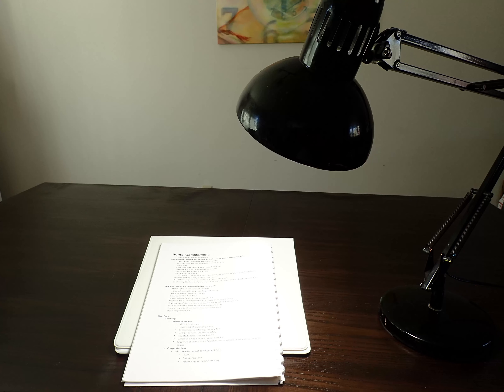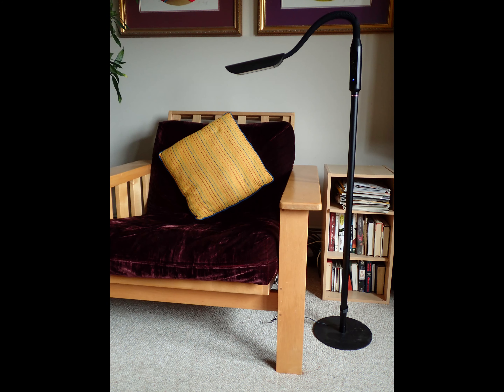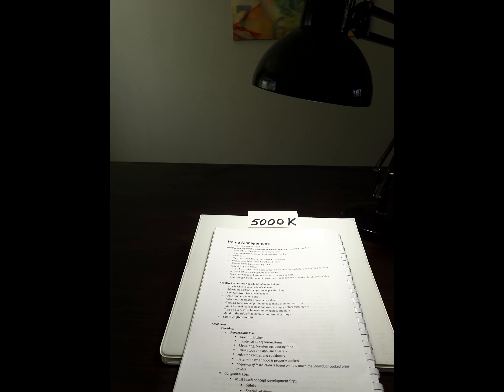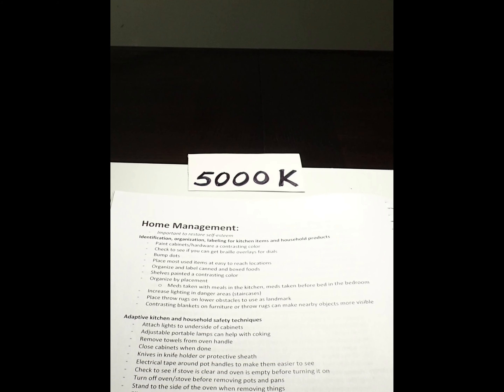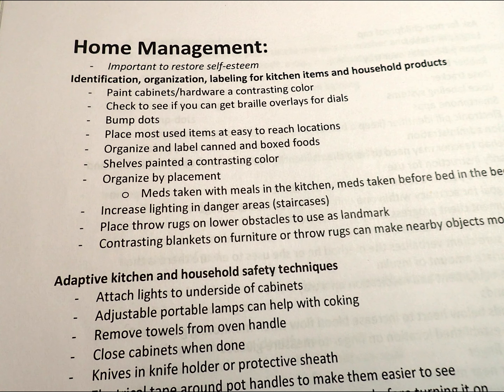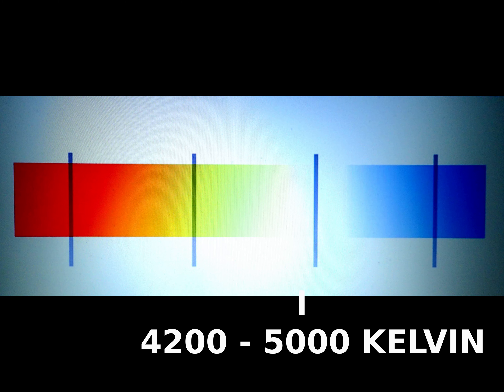Cool light bulbs, like in the swing arm and floor lamps, provide whiter light, making the print appear clear and crisp to many people with low vision. These bulbs are often in the 4200 to 5000 Kelvin range.